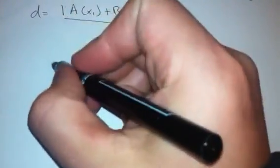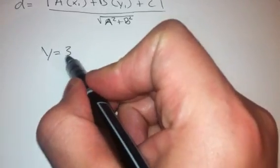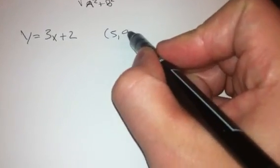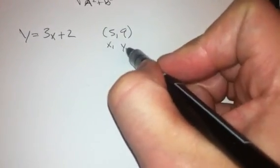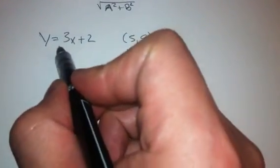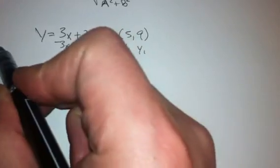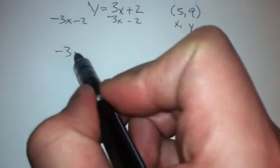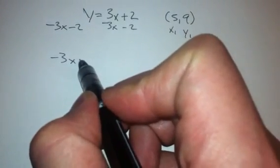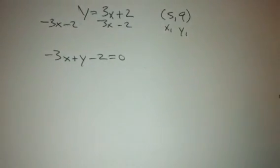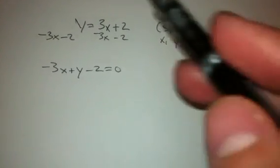We're going to work with the equation y equals 3x plus 2 and the point (5, 9), where 5 is x₁ and 9 is y₁. First, we have to put the line in standard form, so we subtract 3x and 2 from both sides, giving us: negative 3x plus y minus 2 equals 0.